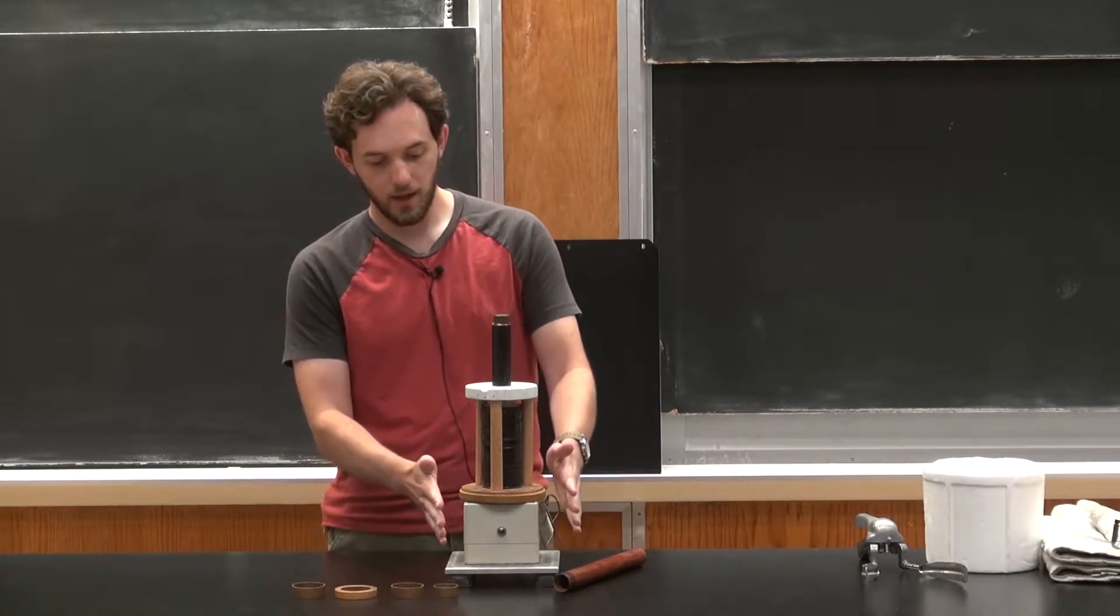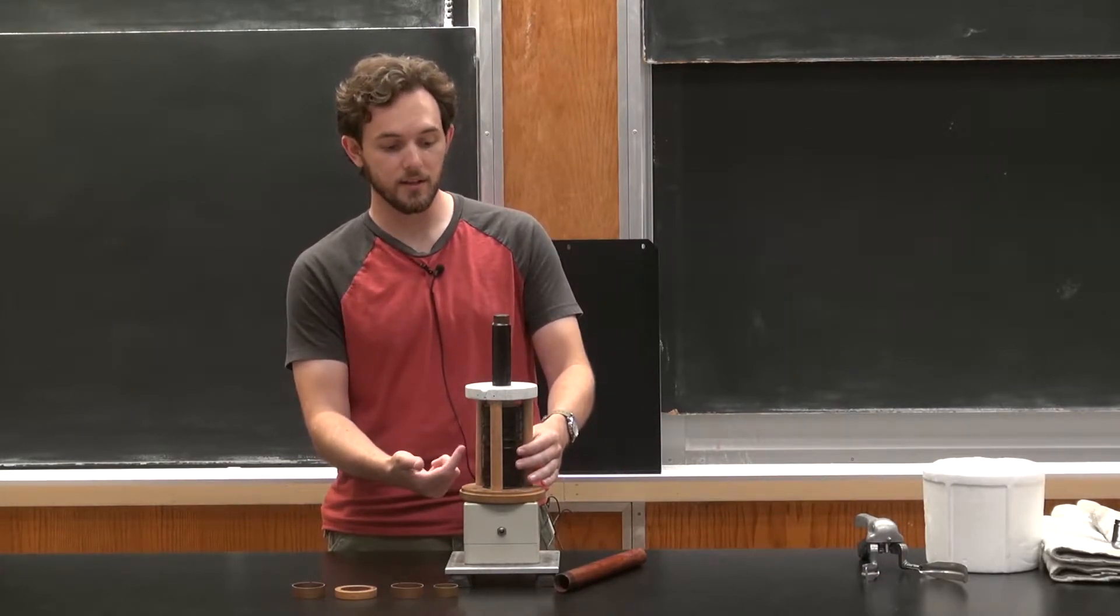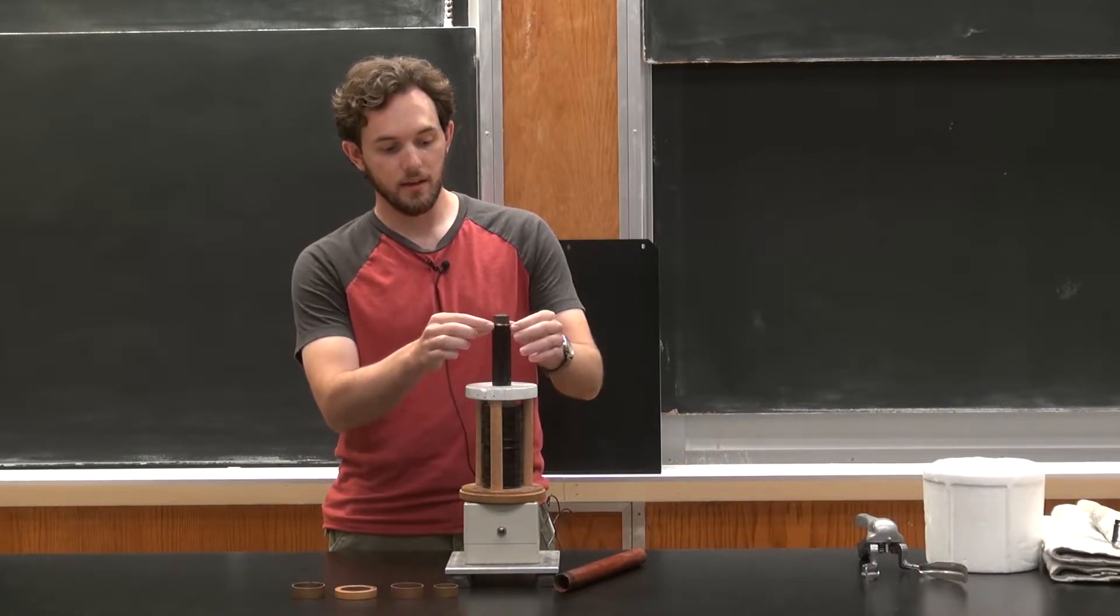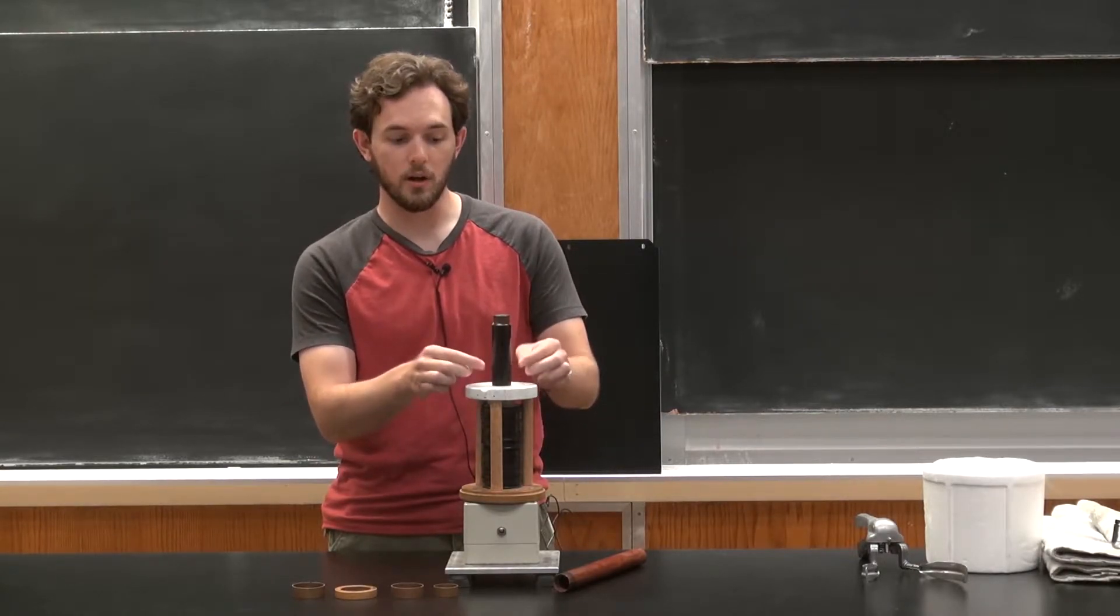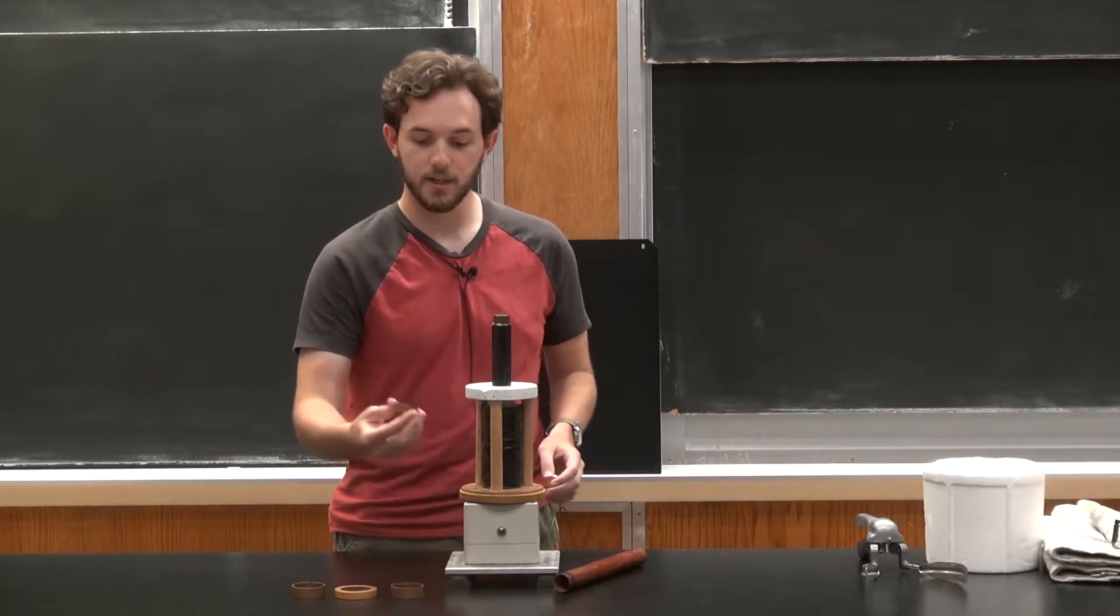So we have here a power supply hooked up to a large inductive coil with many loops of wire inside of it, and on top of that is an iron core rod that simply transmits that magnetic field up to this region here where we actually place these rings.